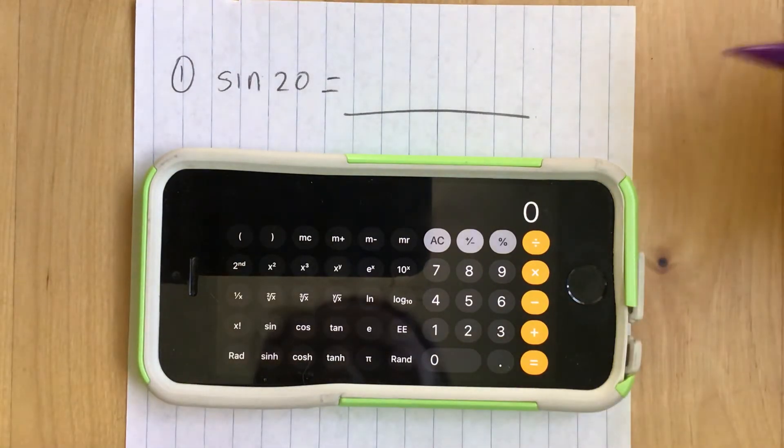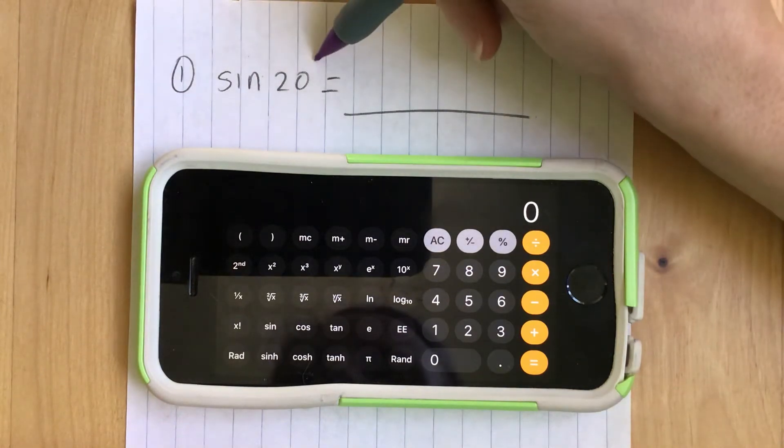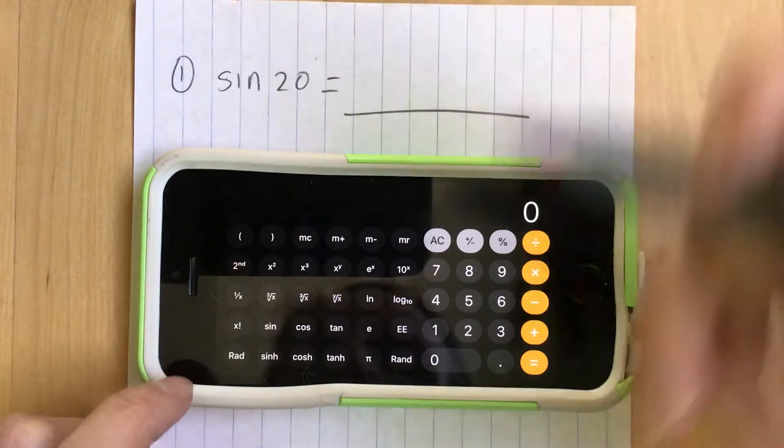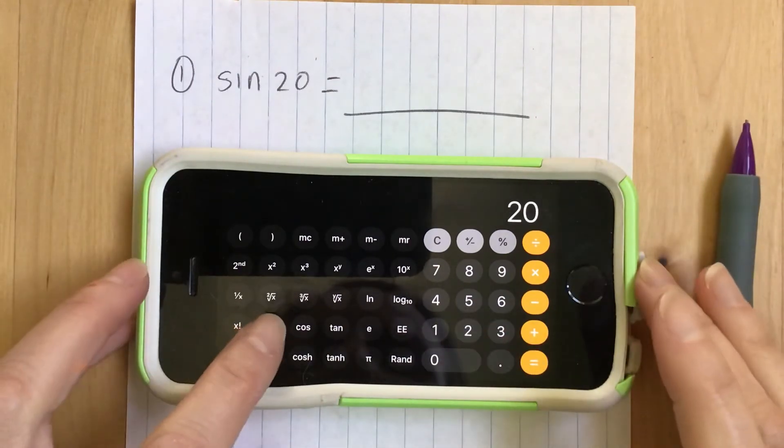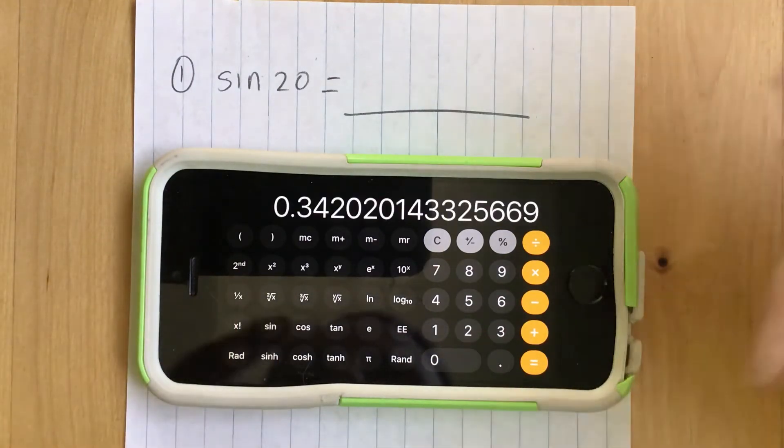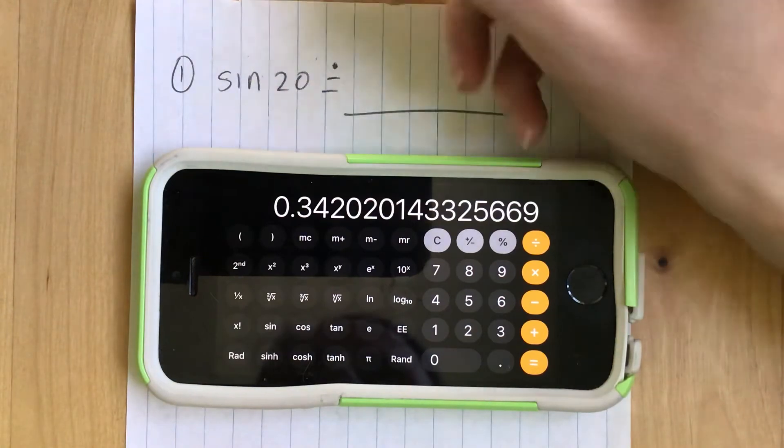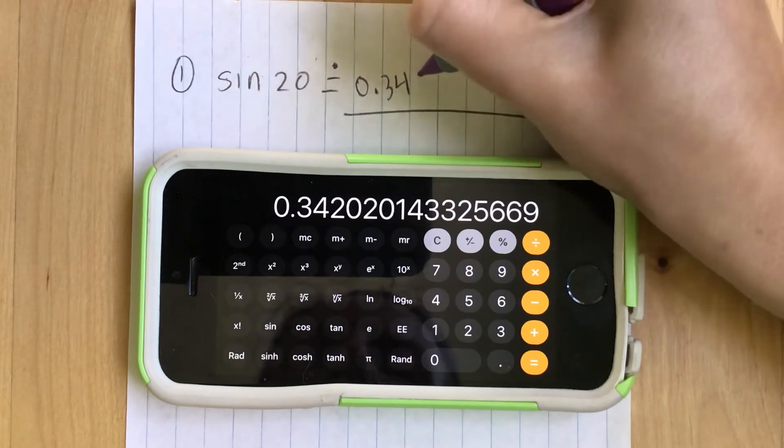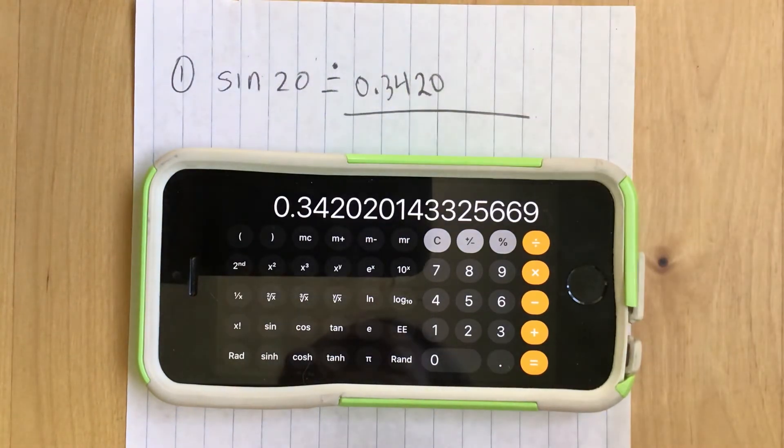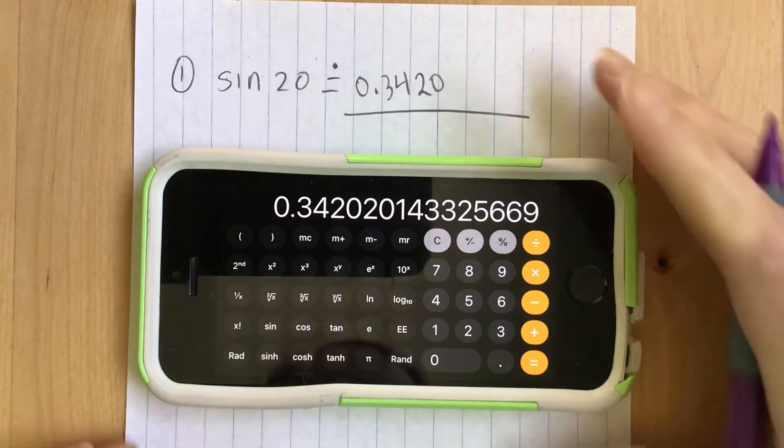If we were going to be figuring out sine 20 we wouldn't press the sine button first. We'd actually enter the number 20 and then press the sine button and then it would give us our answer. So sine of 20 if we round to four decimal places is 0.3420. Now we've done sine 20.